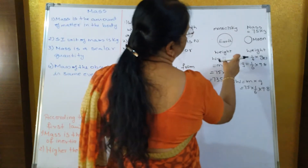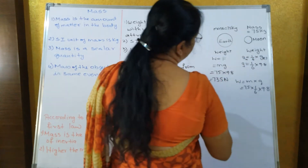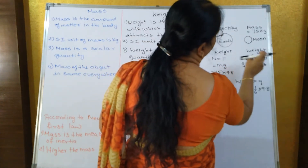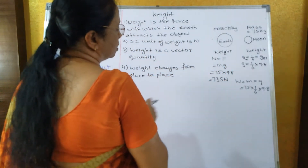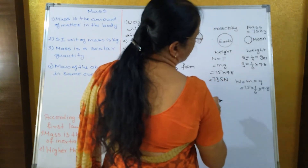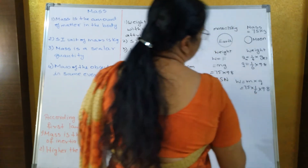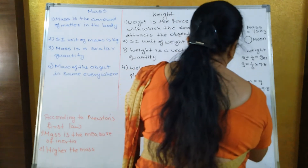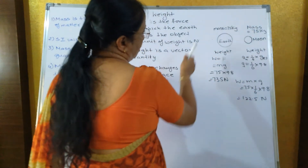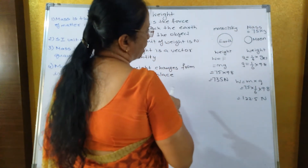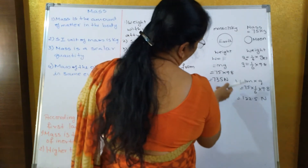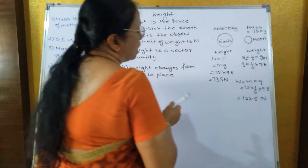The acceleration due to gravity on the moon is one-sixth of the acceleration due to gravity on the earth, that is one-sixth into 9.8. Weight equals m into g, so 75 into one-sixth into 9.8 gives 122.5 Newton. So the mass does not change from place to place anywhere in the universe, but the weight changes. The weight on the earth is different from the weight on the moon, even though the mass is the same.